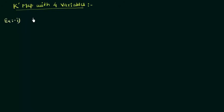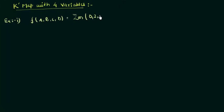The function F with four variables A, B, C, D is equal to summation of minterms m(0, 2, 3, 7, 11, 13, 14, and 15). This is the question and you have to minimize it.